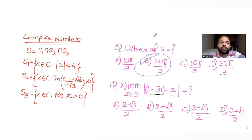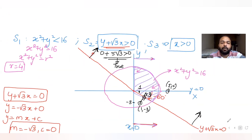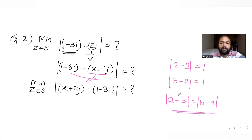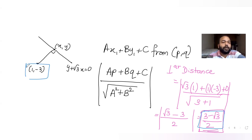So the minimum distance comes out to be (3 minus √3) upon 2. If you look at the options, option C is the correct answer for this question. We found that the minimum distance is nothing but the perpendicular distance, which equals (3 minus √3) upon 2. We simply used the formula for perpendicular distance from a point to a line to find the minimum distance of this complex number x + iy from the given point.